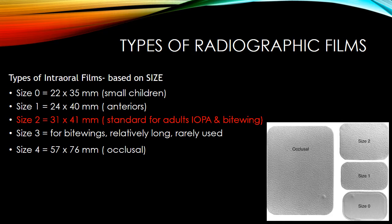Apart from size, films can also be categorized based on speed. There are speed A, B, C, D, E and F films. Speed A, B, and C are no longer in commercial use. In intraoral radiography, speed D and speed E films are most recommended. Speed A, B and C are considered slow films. Speed D is ultra speed, used for occlusal radiographs. Speed E is ektaspeed, used for normal IOPAs.